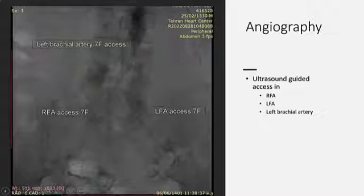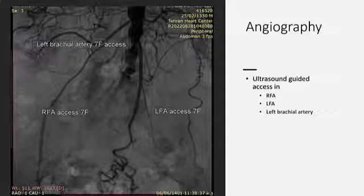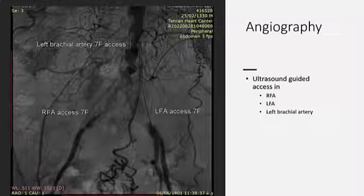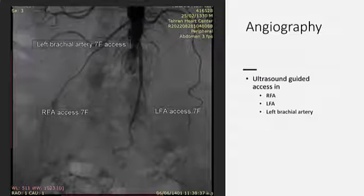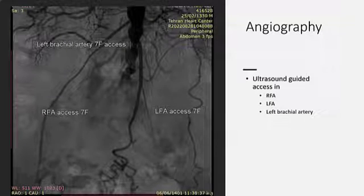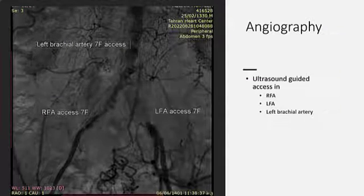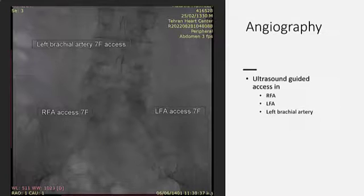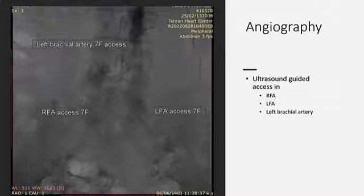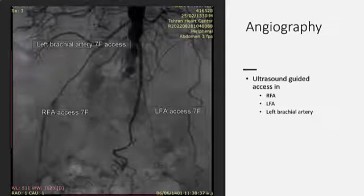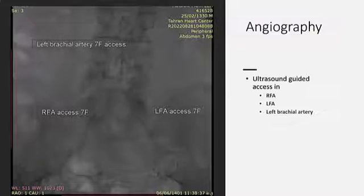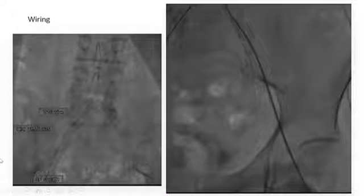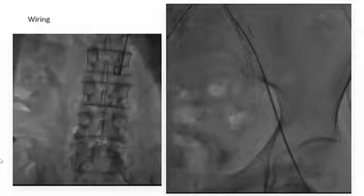We obtained ultrasound-guided access in the right femoral artery, left femoral artery, and left brachial artery. Angiography showed severe calcified and stenotic infrarenal aorta and right common iliac artery, with total occlusion of the left common iliac artery. Injection was done from the long sheath in the brachial artery. Retrograde wiring was done almost easily from the right femoral artery access.